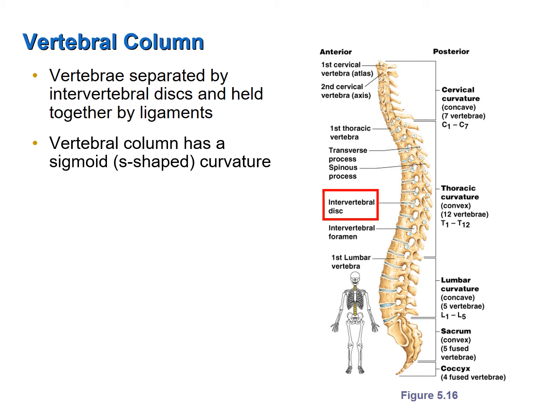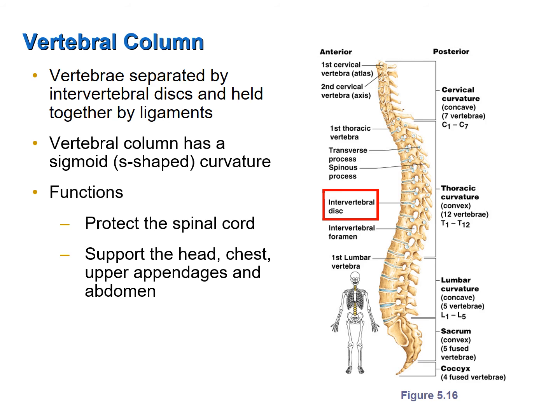The vertebrae themselves are held together by ligaments. The overall curvature of the vertebral column is sigmoid or S-shaped, which allows it to act like a spring, absorbing mechanical energy that might otherwise cause trauma to the brain through normal movements such as running and jumping. In addition to protecting the spinal cord, the vertebral column also supports the weight of the head, the chest, the upper appendages, and the abdomen, and it acts as an axis for movement.